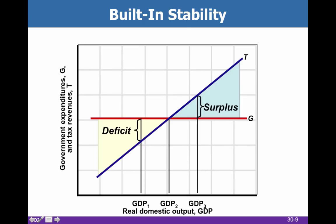Imagine our government spending is flat and we have three potential GDPs. If we're at a relatively low GDP, then our tax revenue is going to be low and we will be in a deficit spending situation — we spend more than we bring in. If the economy is really heated up, we will bring in more in taxes and therefore have a surplus. This is really what was going on in the 90s — the budget was balanced not because spending was low, but because the economy was so good that tax revenue was really high. That's what happened at the end of the Clinton administration and the beginning of the second Bush administration, until September 11th and the subsequent wars.